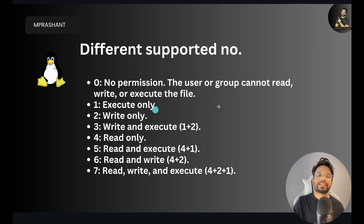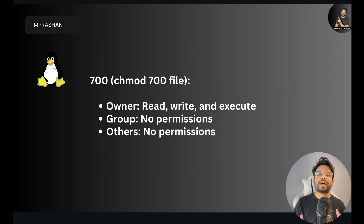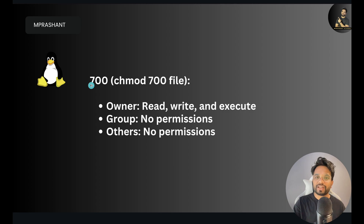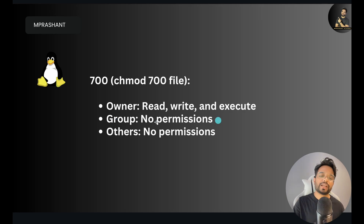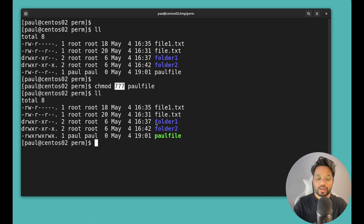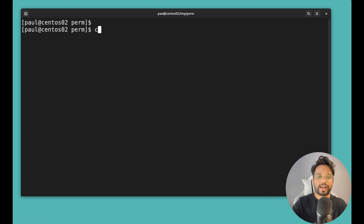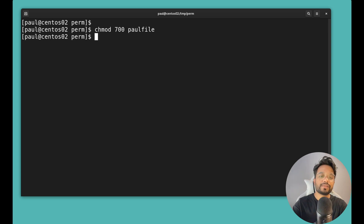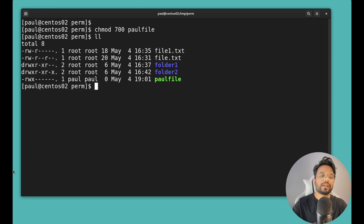In the octal method: 0 means no permission, 1 means execute only, and you can use combinations. For example, '700' means the owner gets read, write, and execute (7), while group and others get no permissions (0). Running 'chmod 700 paul_file' and then 'll' shows 'rwx------' — user has all permissions, others have none.